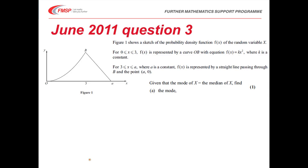Figure 1 shows a sketch of the probability density function of a random variable X. For 0 < x < 3, f(x) is represented by a curve with equation kx². For 3 < x < a, where a is a constant, f(x) is represented by a straight line passing through the point (a,0). We're told that the mode of X equals the median of X.